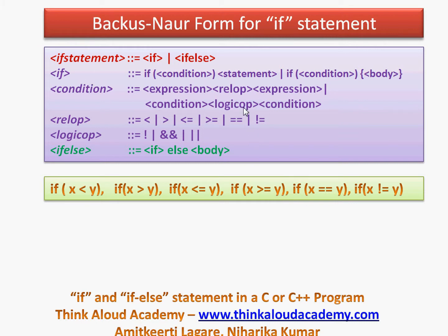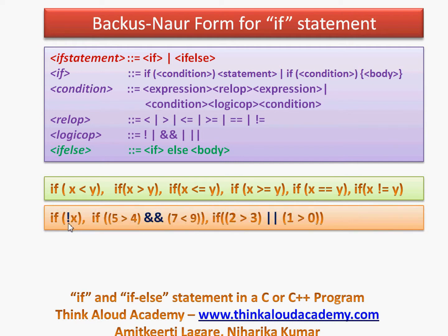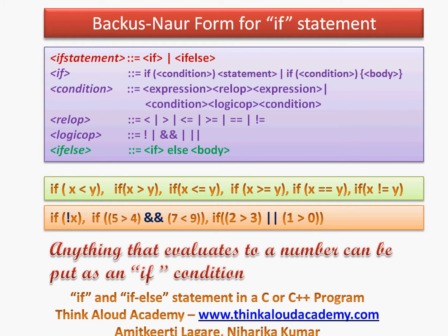For a logical operator, which is a condition followed by a logical operator followed by a condition, we have examples using the not operator, the AND operator, and the OR operator. For AND, both conditions must be satisfied to enter the if block, whereas for OR, if either condition is satisfied we enter the if block. The condition means anything that evaluates to a number can be put as an if condition. Whatever we put inside the brackets of if should evaluate to some number — only then it is a valid if statement. If it does not evaluate to a number, you will get a compilation error.